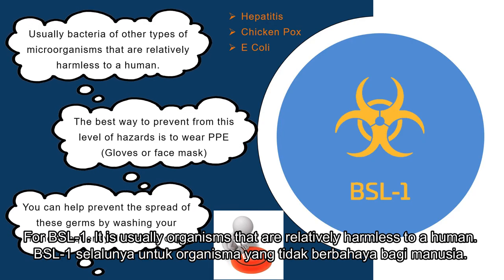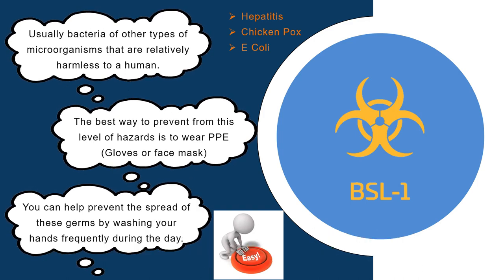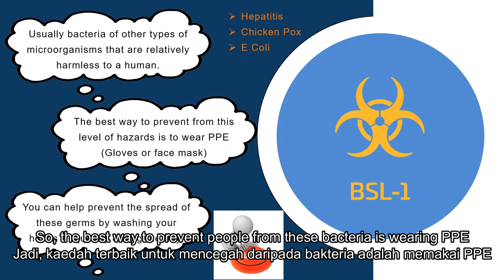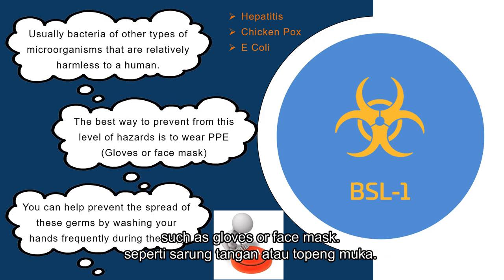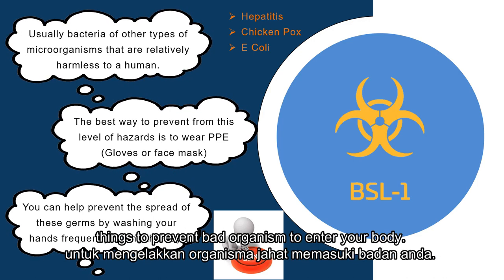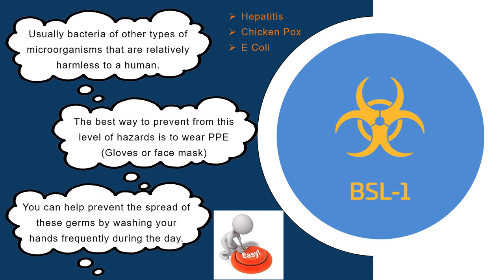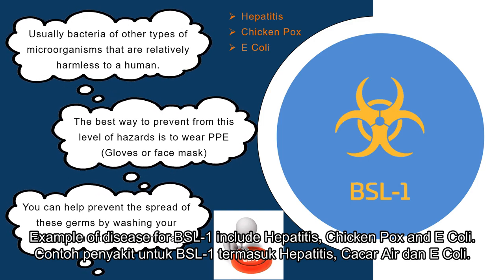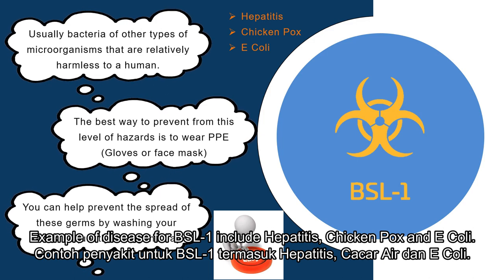For BSL-1, it usually involves organisms that are relatively harmless to humans. The best way to prevent exposure is wearing PPE such as gloves or face masks, and washing hands is also one of the most important preventive measures. Examples of diseases for BSL-1 include hepatitis, chickenpox and E. coli.